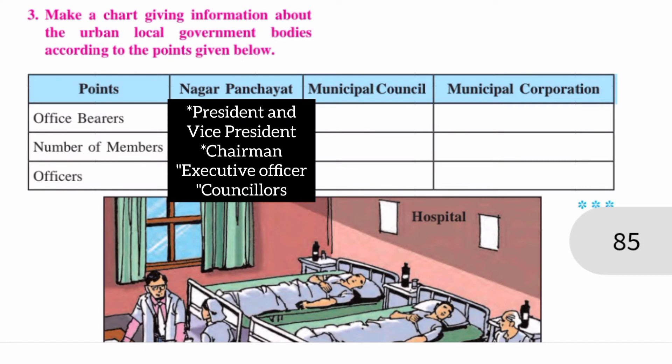Question Number Three — Make a chart giving information about the urban local government bodies according to the points given below. The three points given are: office bearers, number of members, and officers. For Nagar Panchayat, the answer will be: President, Vice President, Chairman, Executive Officer, and Councillors.